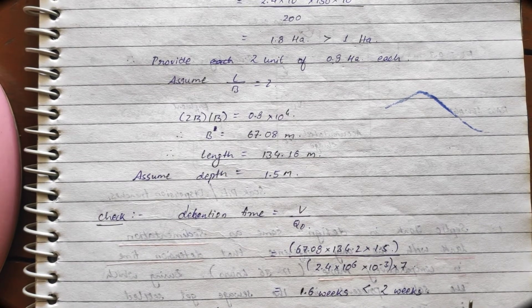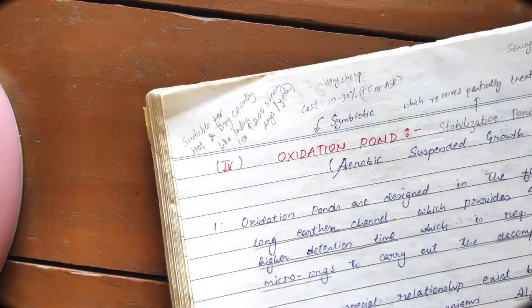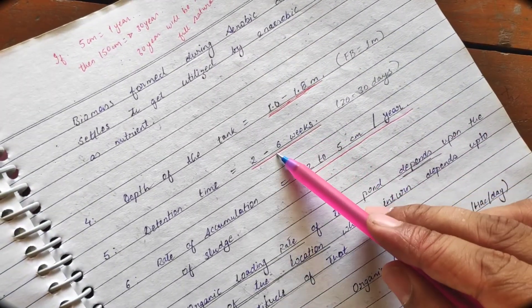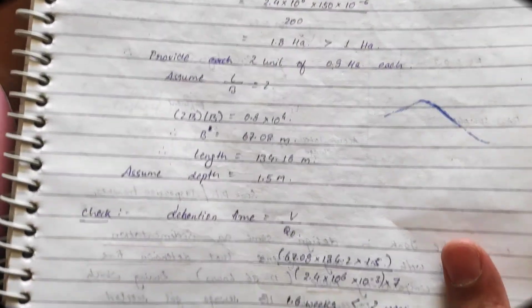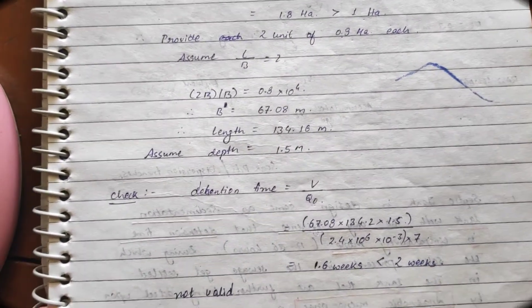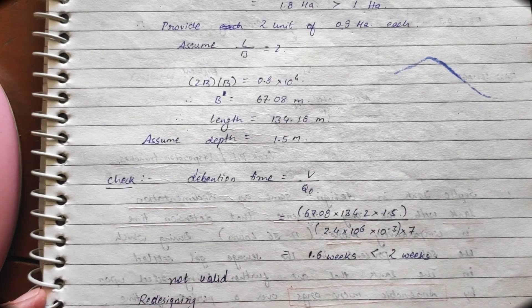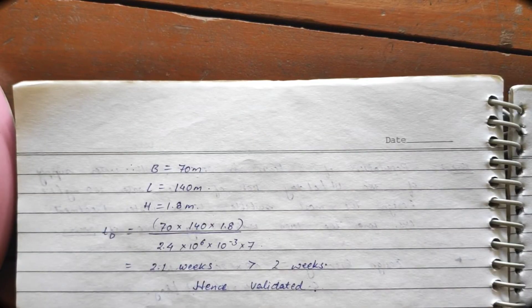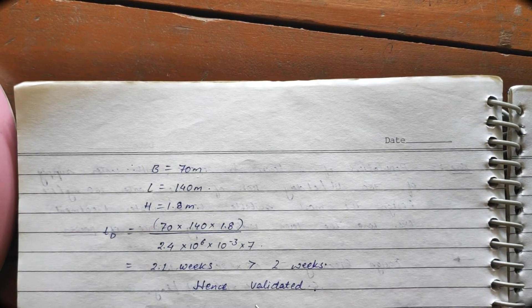And how much is the detention time? Our detention time should be in detention time is 2 to 6 weeks. So, this is not valid. So, what we have to do? We have to again redesign.